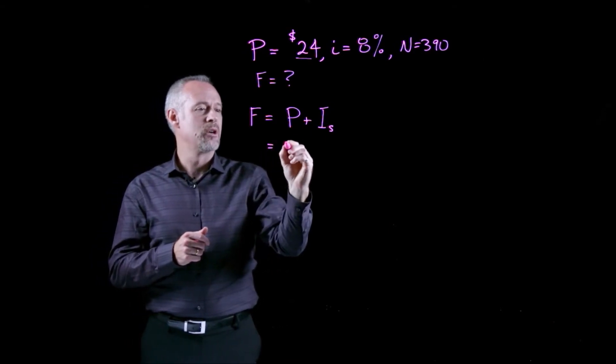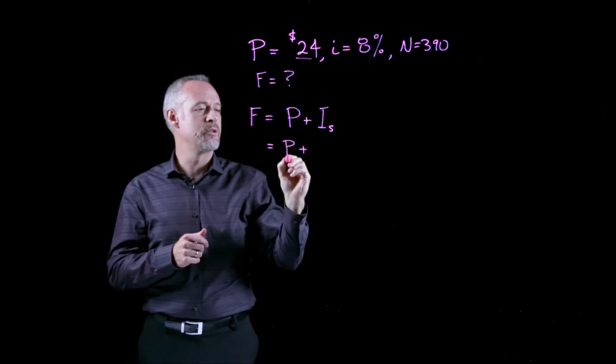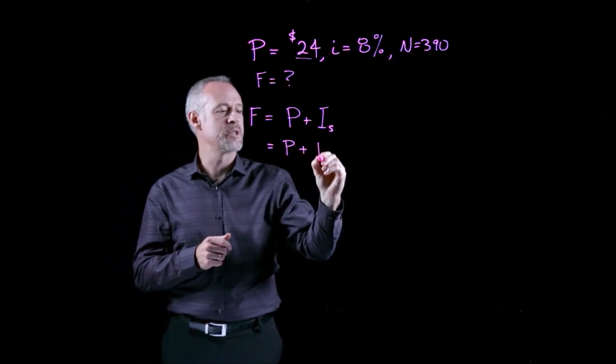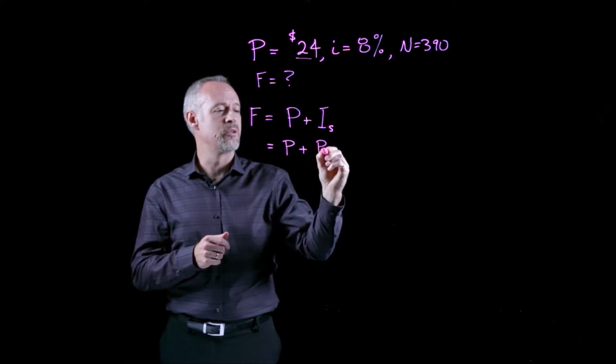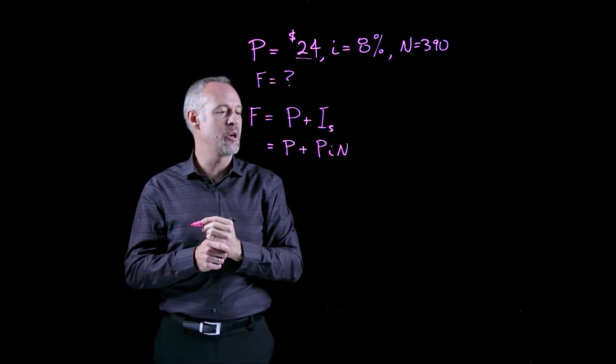So, if we have our initial $24 plus what we learned in the previous video about simple interest, the simple interest is whatever the initial investment was, times the interest rate, times the number of periods.